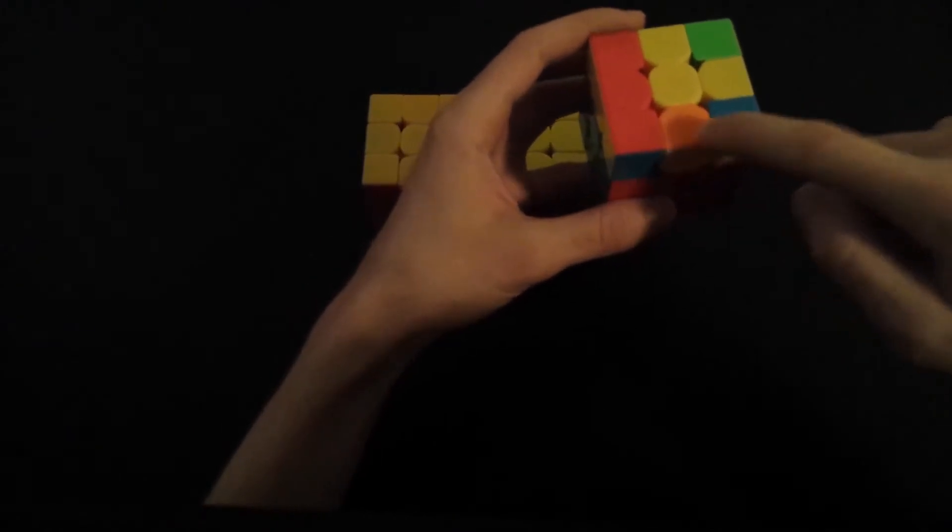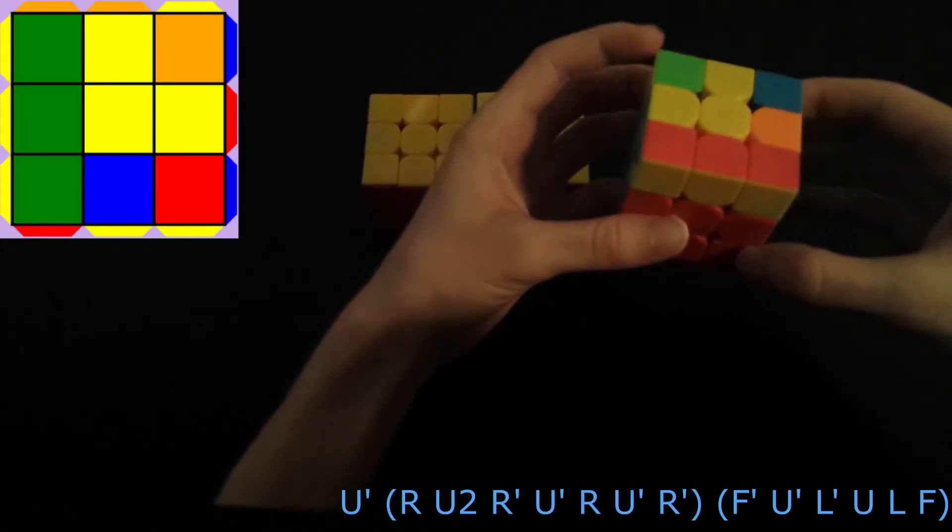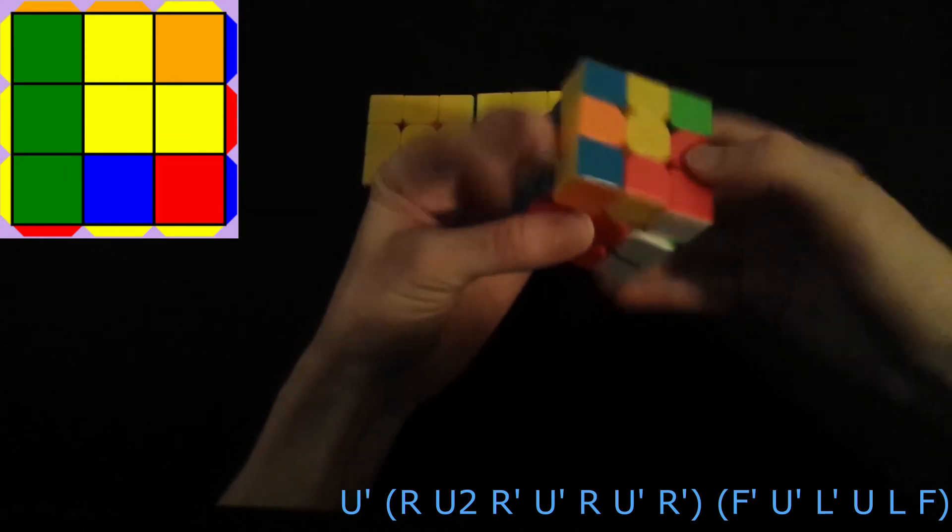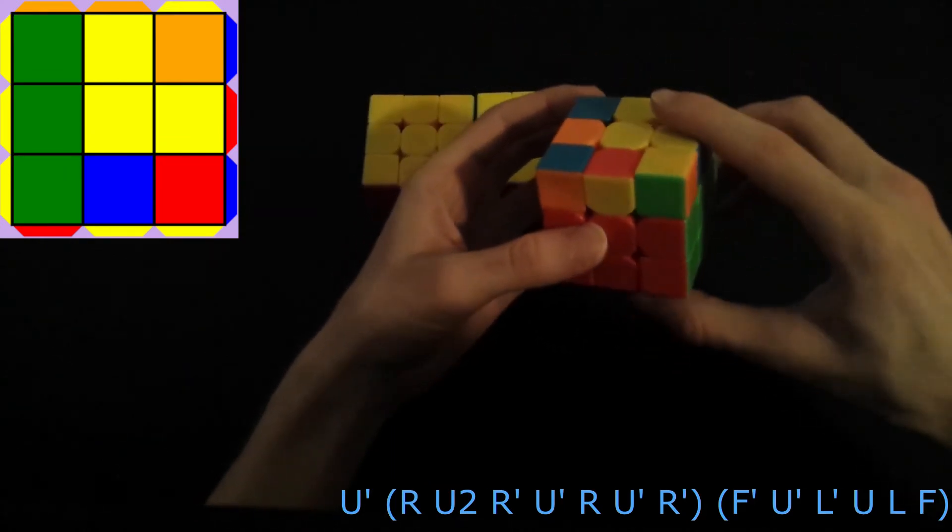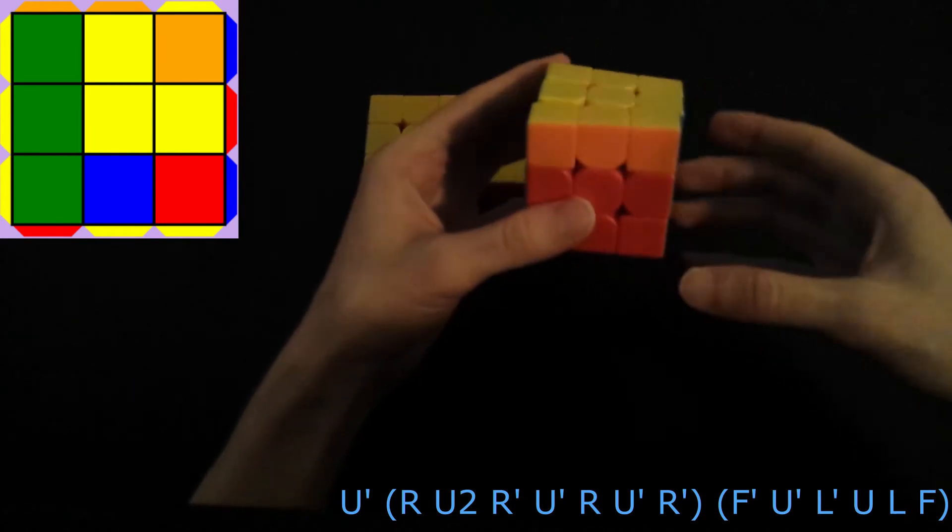For this case, if you have these two colors on the right adjacent, you do U' anti-sune, and that sets up this lefty F6CF', which is the normal OLL.